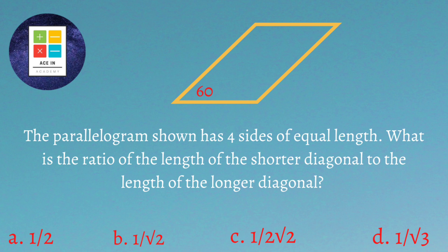The question is as follows: The parallelogram shown has four sides of equal length. What is the ratio of the length of the shorter diagonal to the length of the longer diagonal? We are provided four options for this question: option A is 1 by 2, option B is 1 by root 2, option C is 1 by 2 root 2, and option D is 1 by root 3.